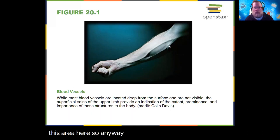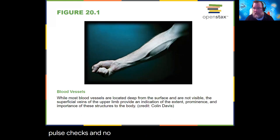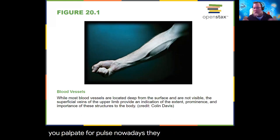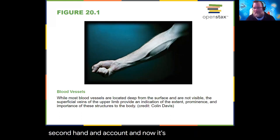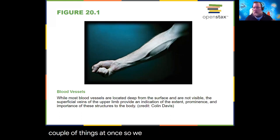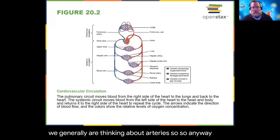We always draw blood from a vein — it's called the median cubital vein. Arteries are a little more protected, not as close to the surface. We use pulse checks on arteries. Nowadays you put a pulse oximeter on and can measure heart rate and oxygen levels at once. When we're thinking about blood pressure, we're generally thinking about arteries.